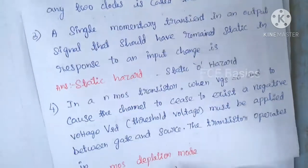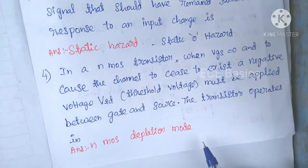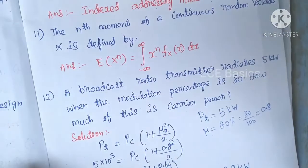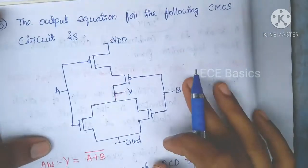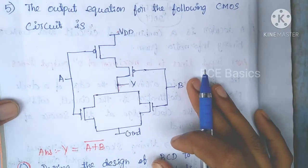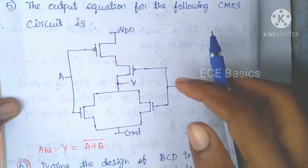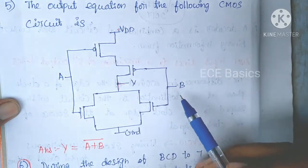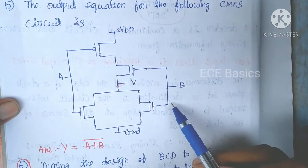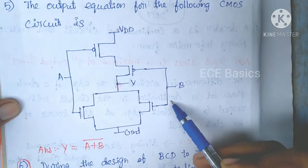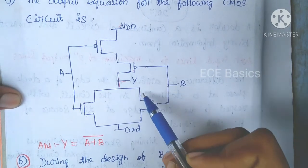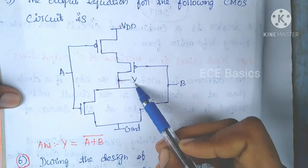To find the output, we are going to use the output equation. The output equation gives us Y.